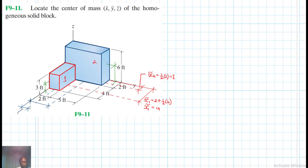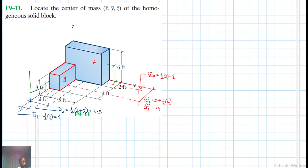For the Y centroid coordinates: Y-tilde one and Y-tilde two are each equal to half of 3, which gives 1.5. And Z-tilde one and Z-tilde two are also equal to half of 3, giving 1.5.